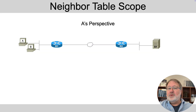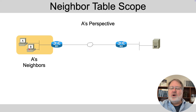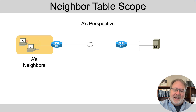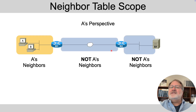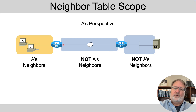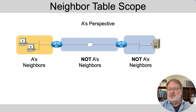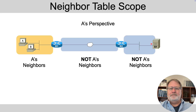We'll close the video looking at a few neighbor tables. For context, consider host A, host B, and router R1 — they're all neighbors in terms of what you see in a neighbor table. From A's perspective, none of the other MAC addresses and IPv6 addresses on other subnets need to be in A's neighbor table. The neighbor table is needed for communications with other devices on the same link, on the same subnet.